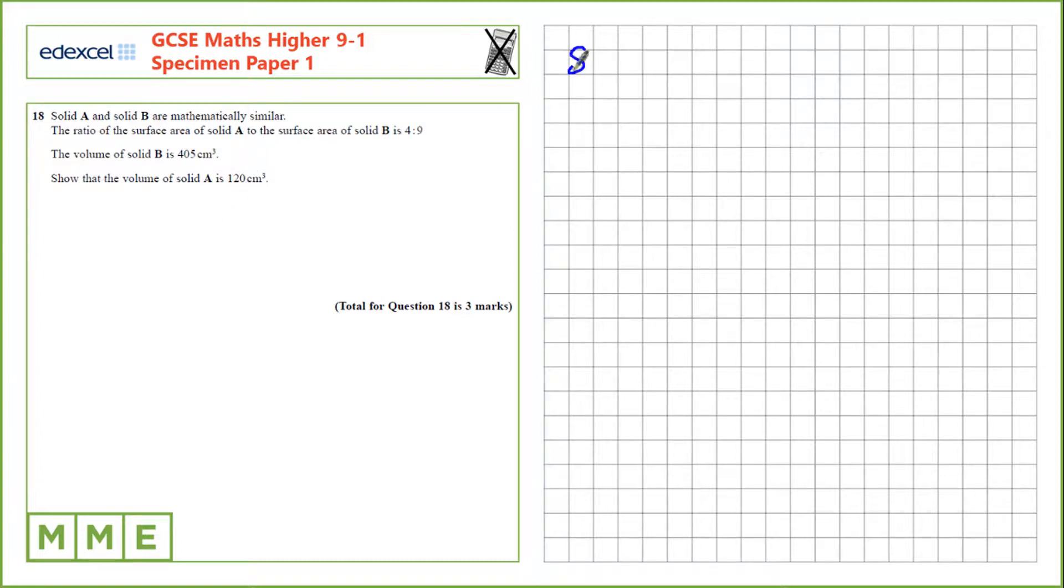If we know the scale factor for area, 4 to 9, we can find out the scale factor for length by taking the square root of those. So that would be 2 to 3.